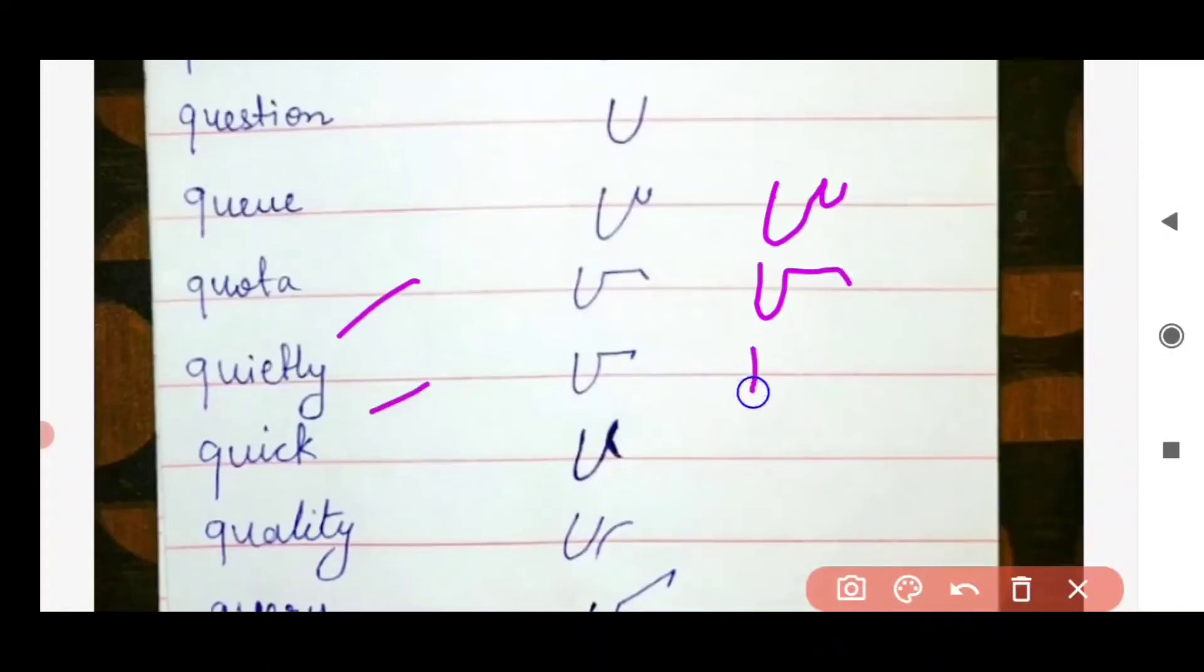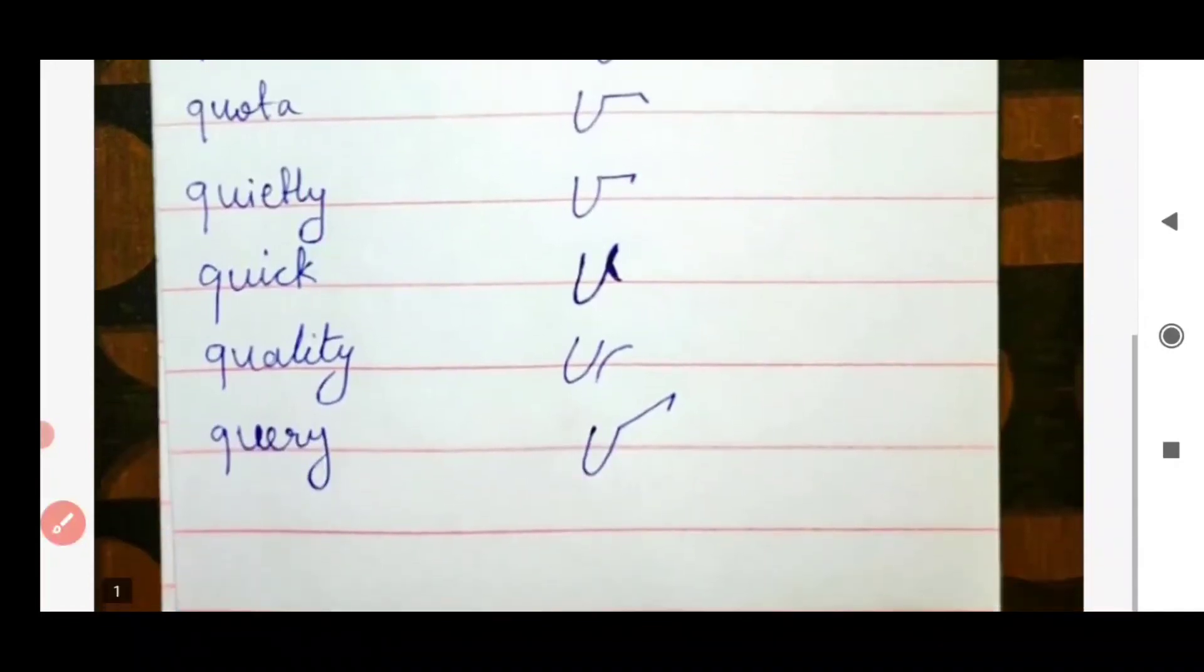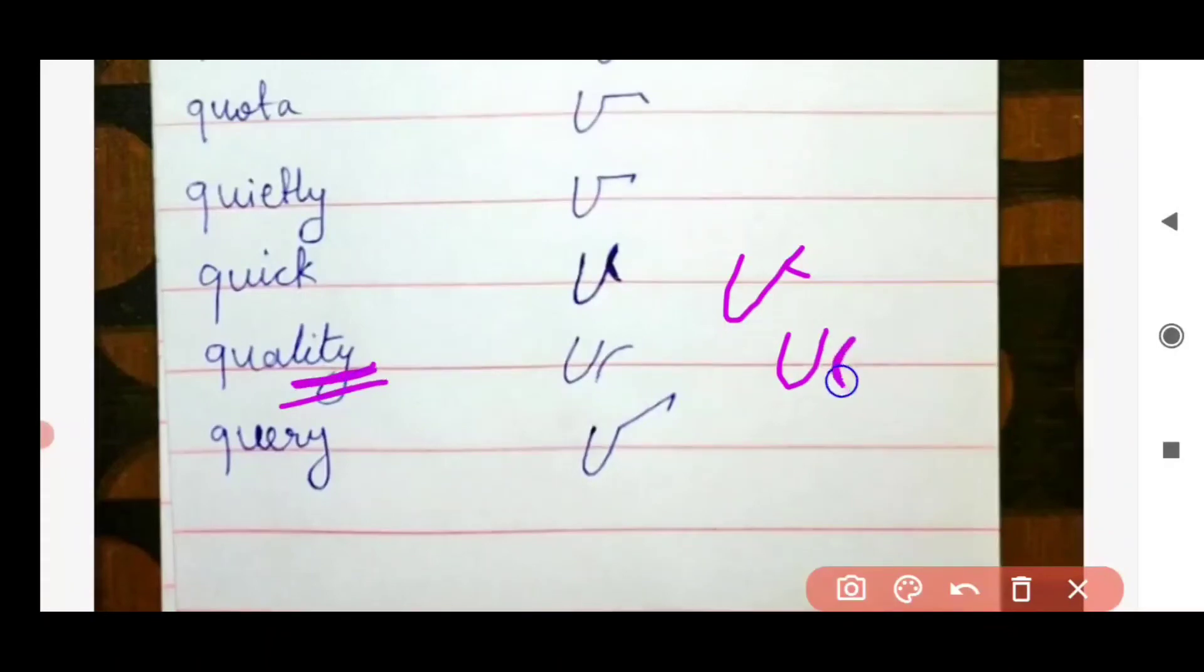Quietly. हम LY को इस तरह से indicate करते हैं, अगर आपको rule याद है तो आप समझ रहे होंगे कि तरह से outline draw हो रही है। Quick. Quality. यह last में हम इस तरह से indicate करते हैं, okay.